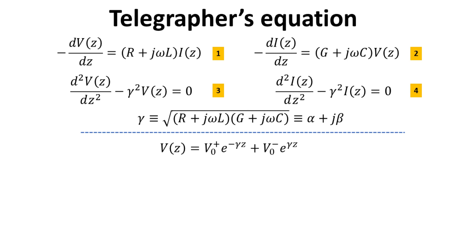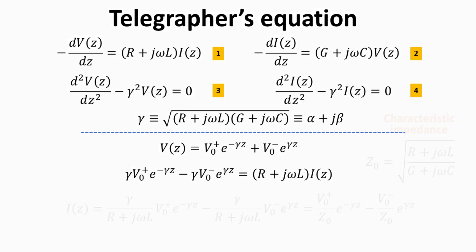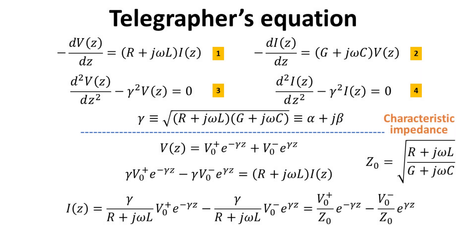The general solution is then a superposition of the two exponential functions, with coefficients denoted as V0-plus and V0-minus, whose meaning we will explain in what follows. Substituting the general solution of V(Z) into the first telegrapher's equation allows us to relate the voltage to the current I(Z). Straightforward algebraic manipulation then allows us to arrive at an expression for the general solution of the current in analogous form to the voltage.